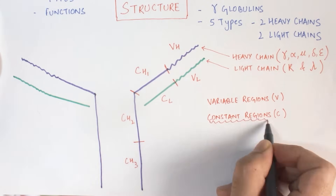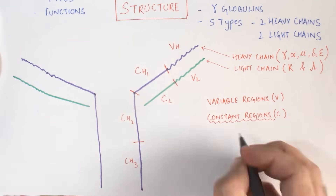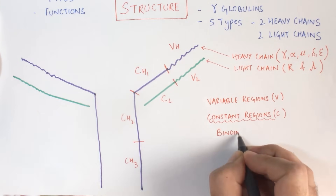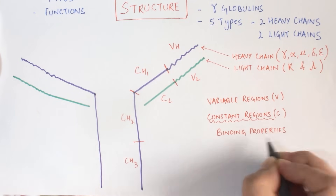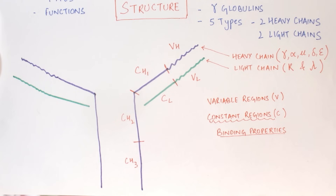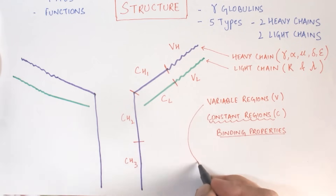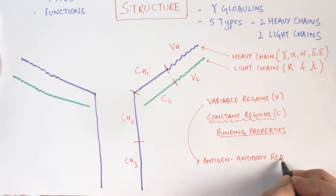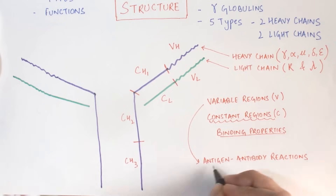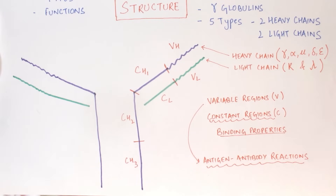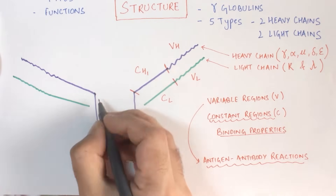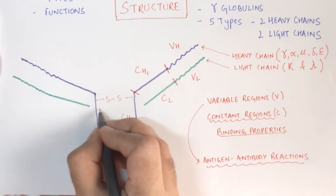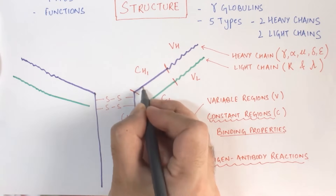The constant regions confer specific properties to the antibody — they determine on which surface the antibody will bind. For example, the IgE binds to the mast cells. The variable regions determine to which type of antigens the antibody will react.